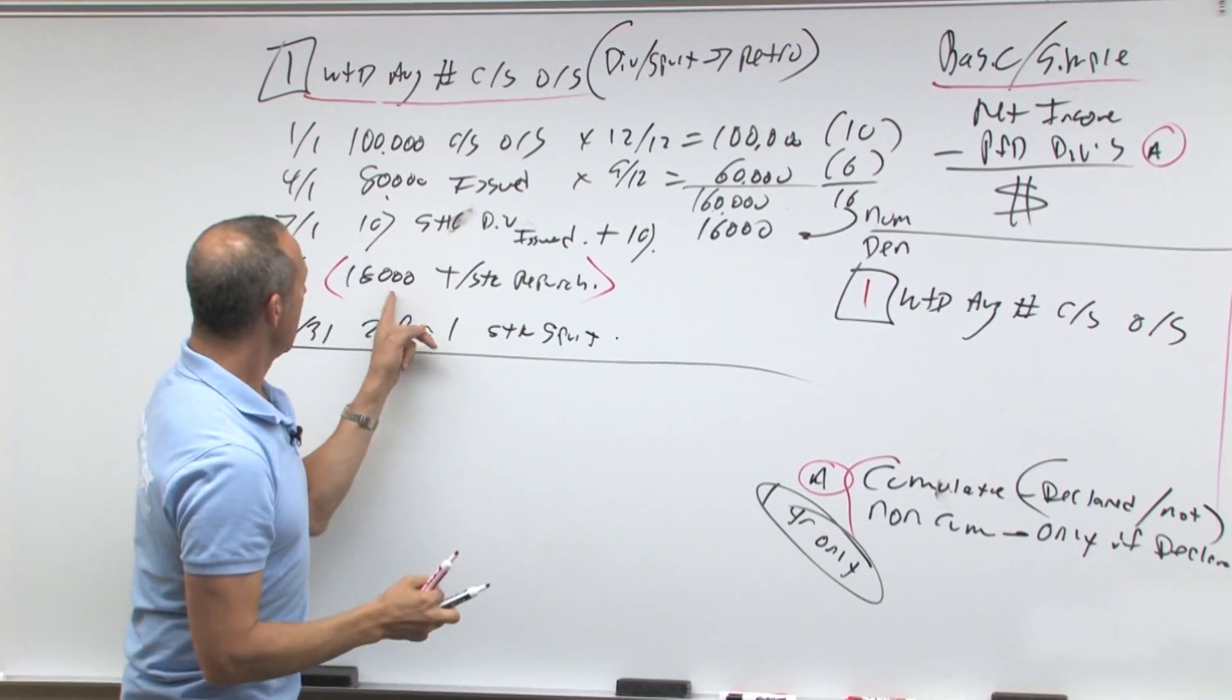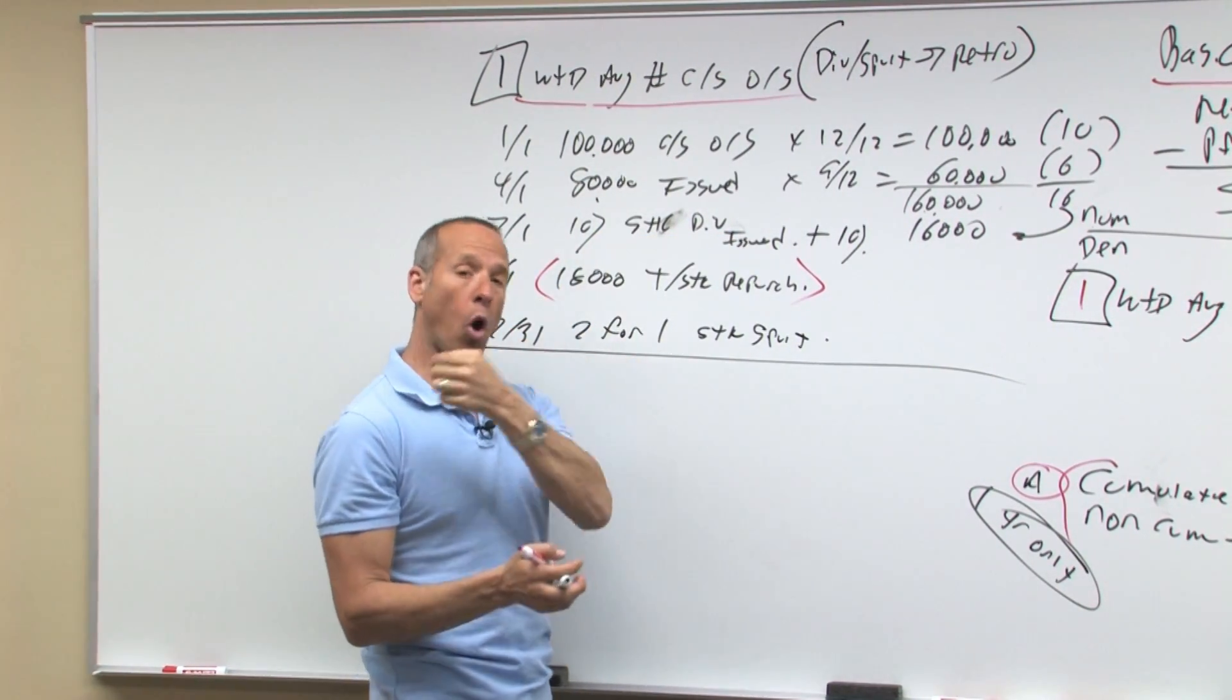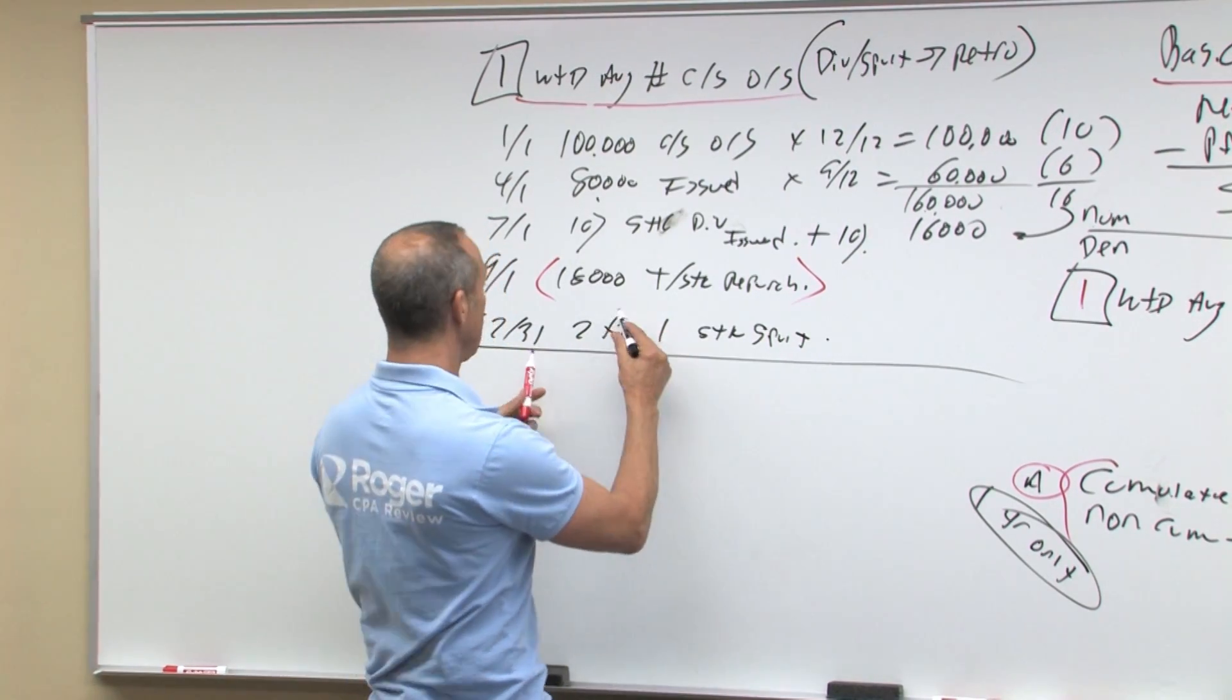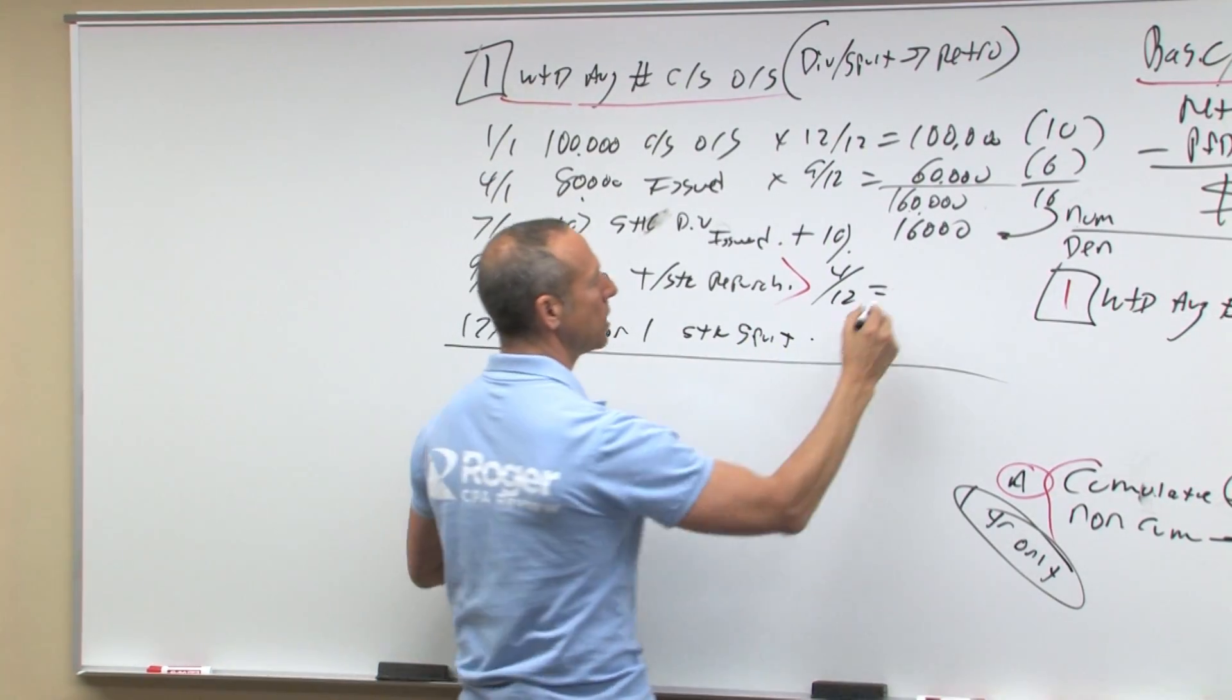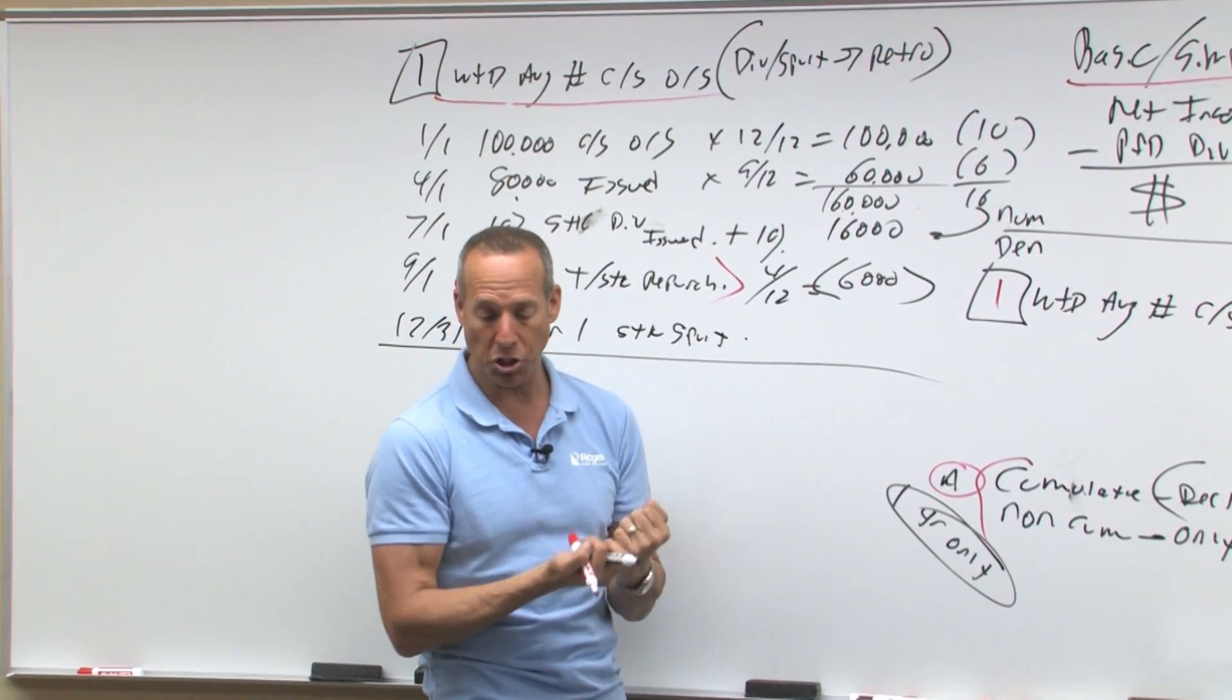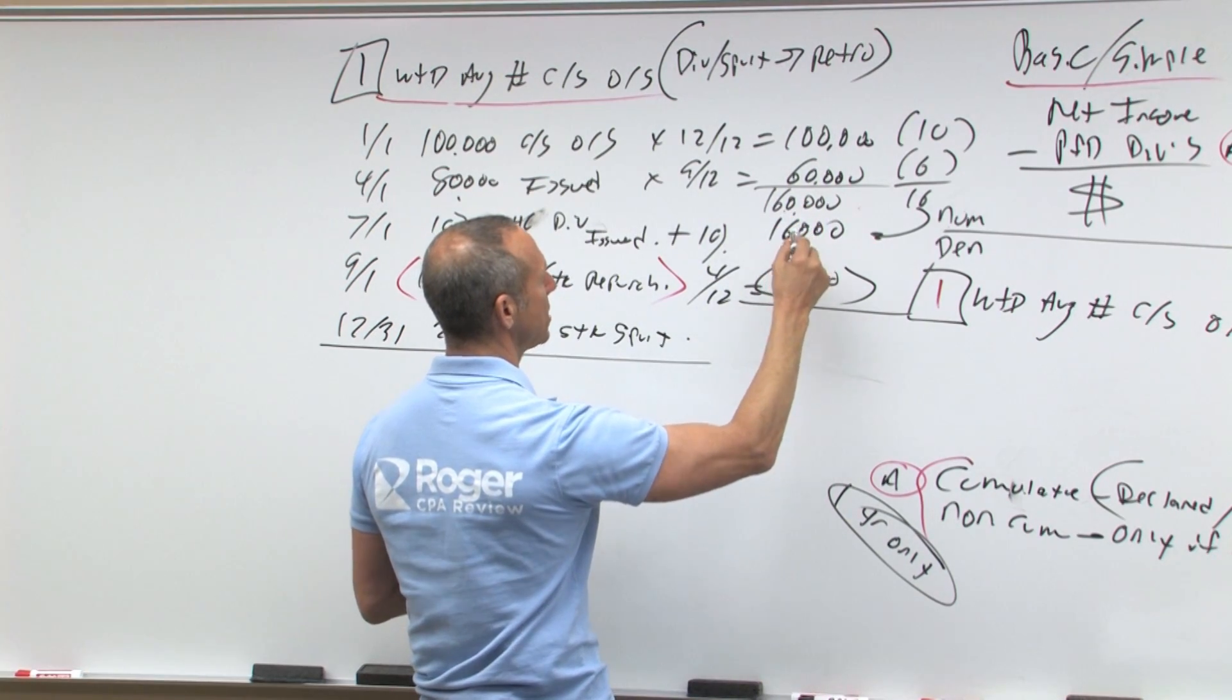Now this one's tricky. 18 of the 100 were not outstanding for what? Nine - now careful, this was not on September 30th, it was September 1st. So all of nine, all of 10, all of 11, all of 12, which means that 18,000 shares were not outstanding for four twelfths of the year. So 18 at four twelfths is 6,000, that's shares that are not outstanding. In other words, you would not have to pay a dividend to those, because those shares were not outstanding for that portion of the year, that gives me 160 plus 16 is 176, minus 6 is 170.